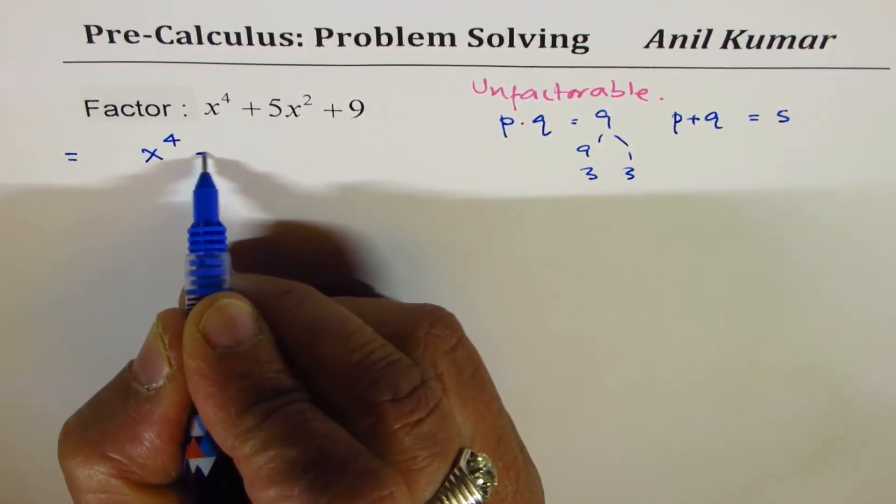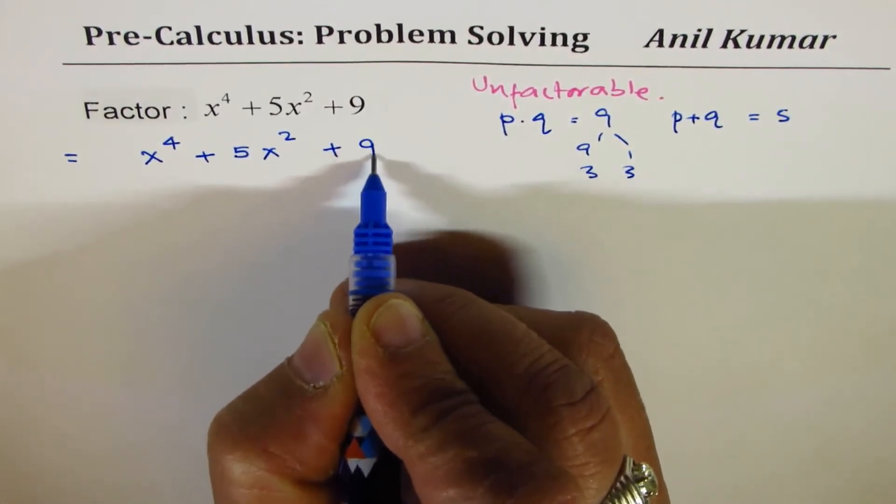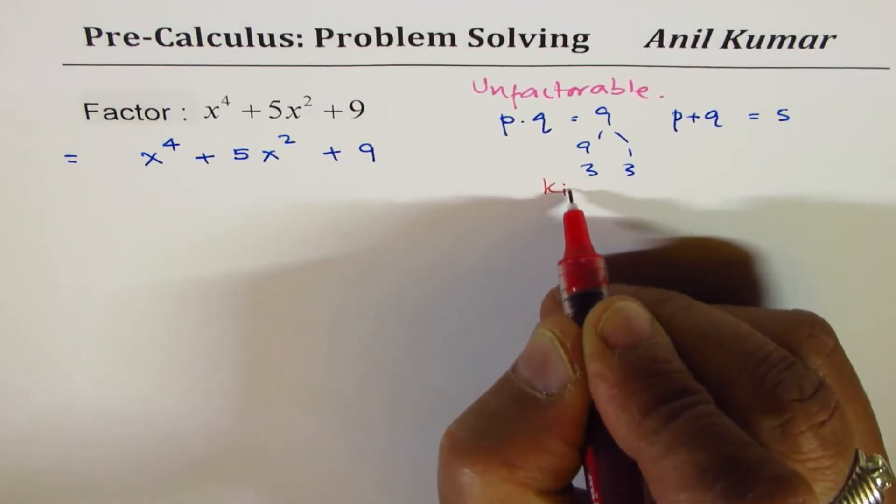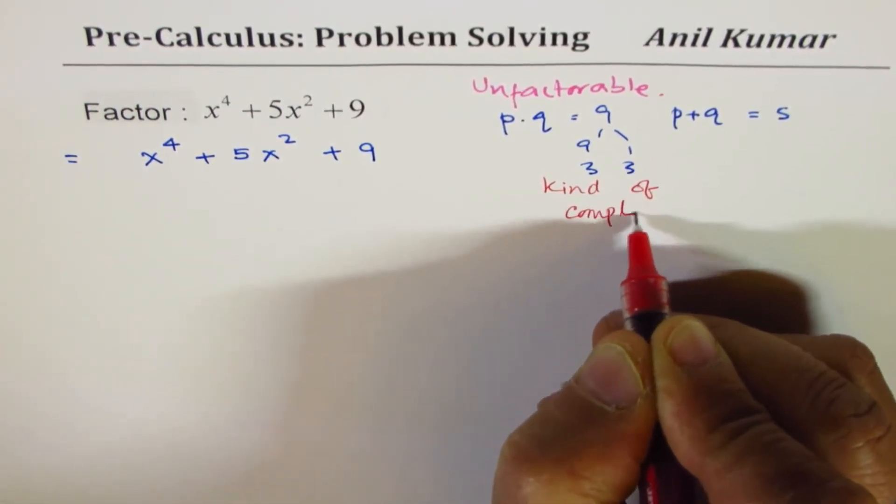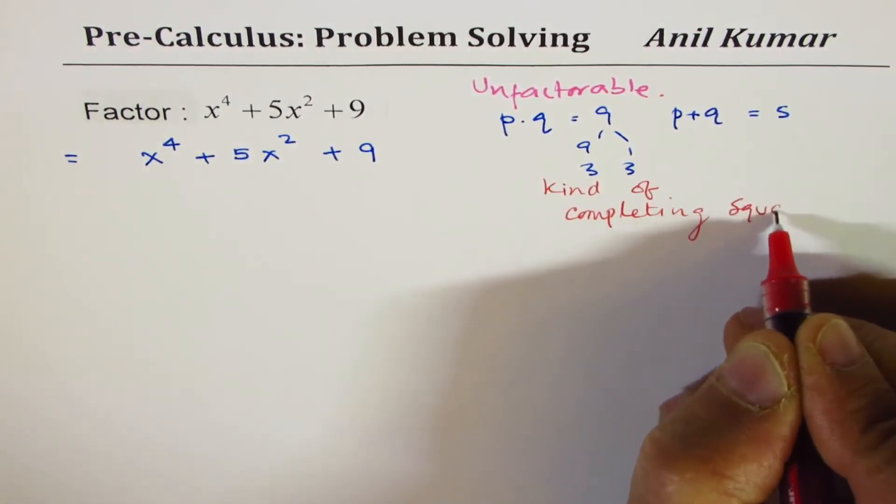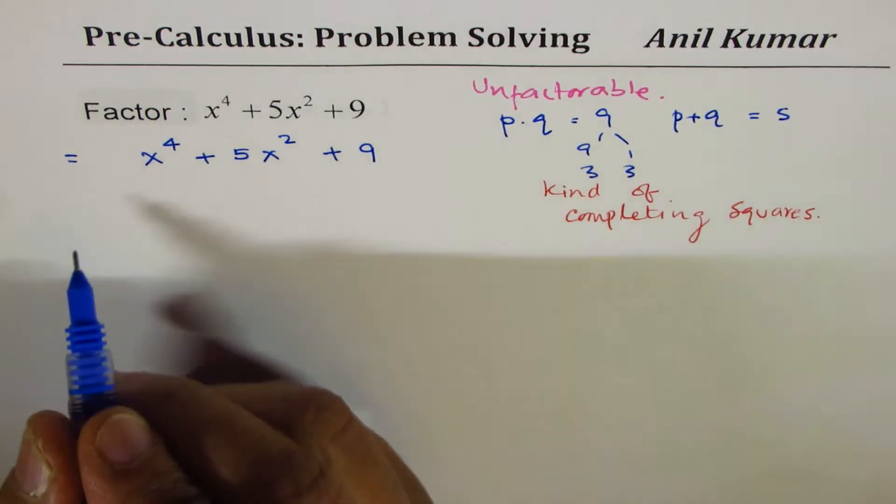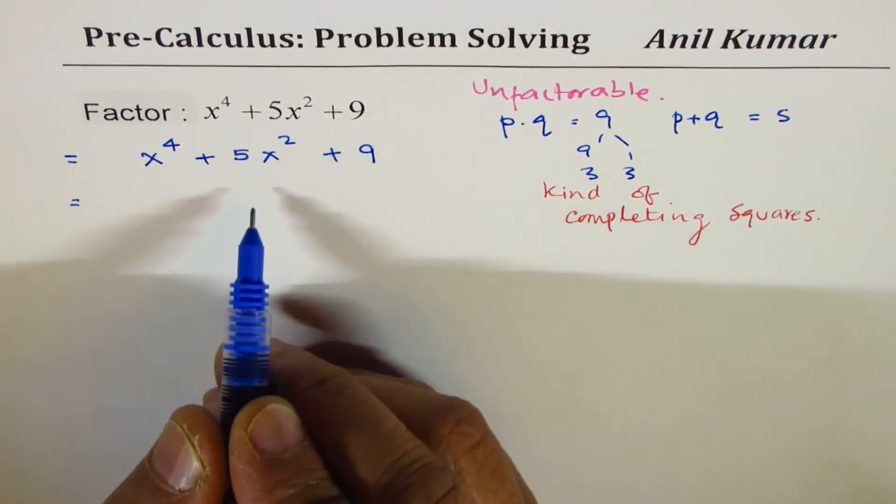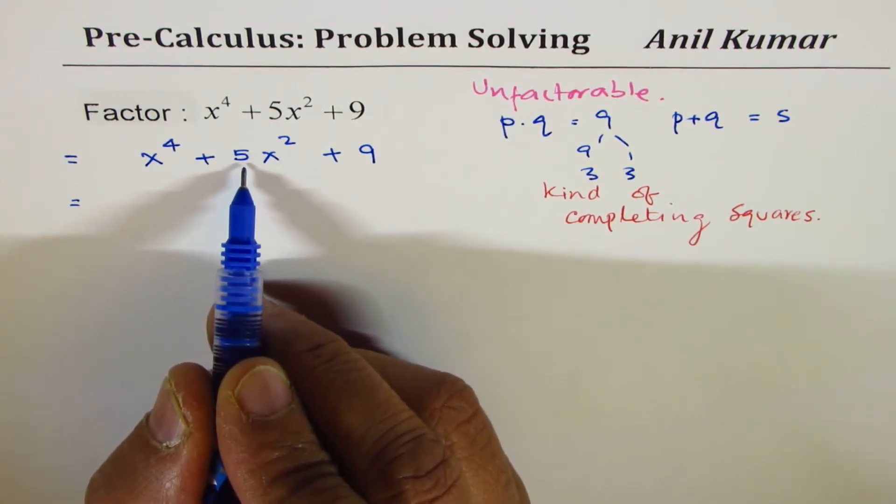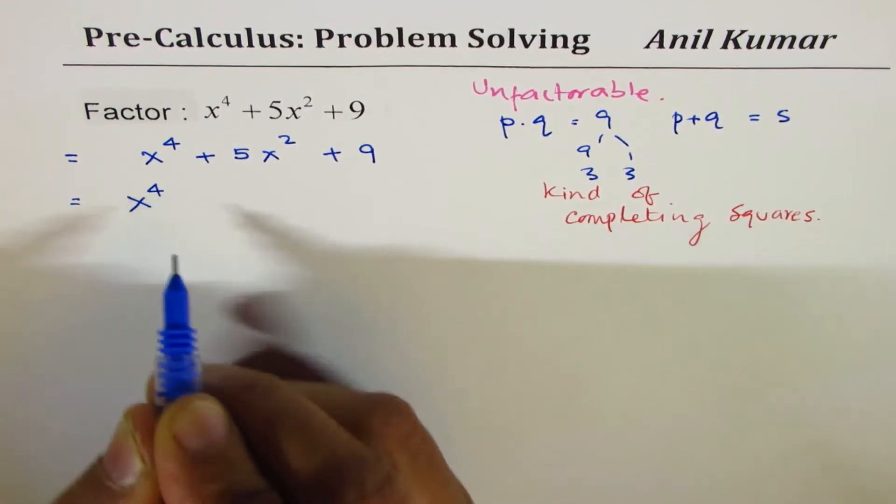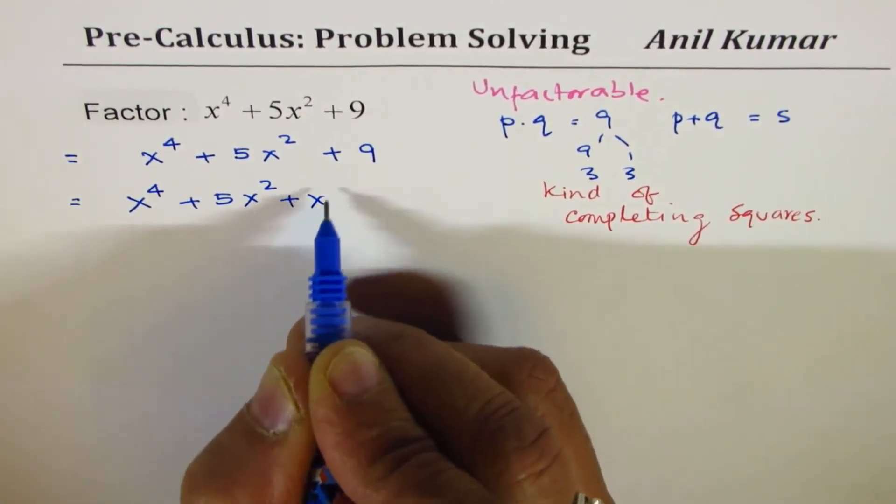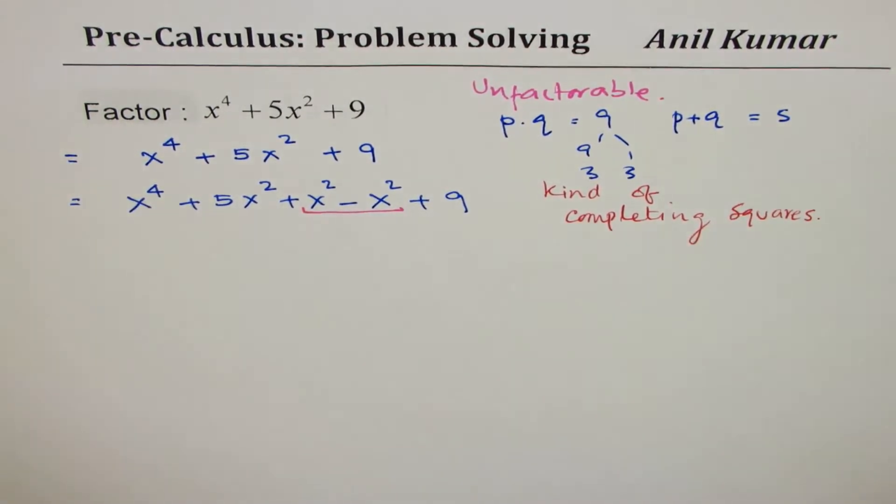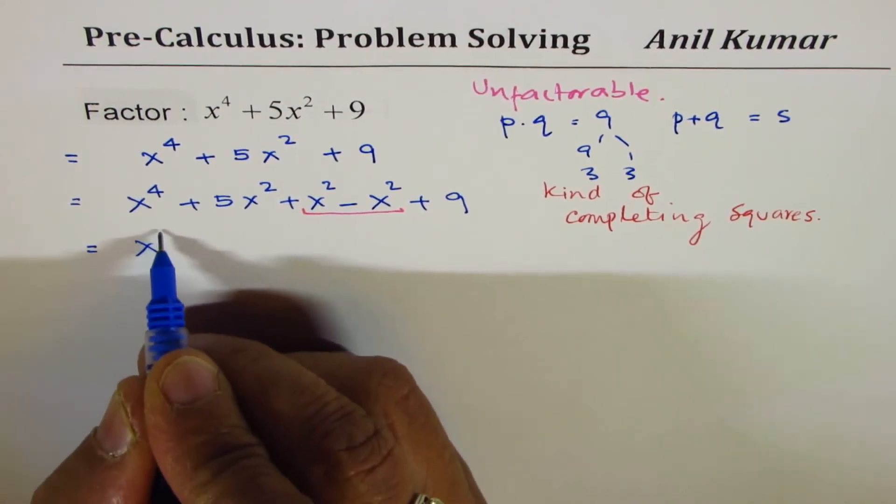So the question given to us is x⁴ + 5x² + 9. So we adopt a method which is kind of completing squares. Does that give you a hint? So what we will do here is we'll try to make a perfect square here. 9 is 3². So if I make 6 here, then yes, I can do something. So what I will do here is that I will add 1x² and also subtract 1x². Do you see that part? So what I did was that I added and subtracted x².